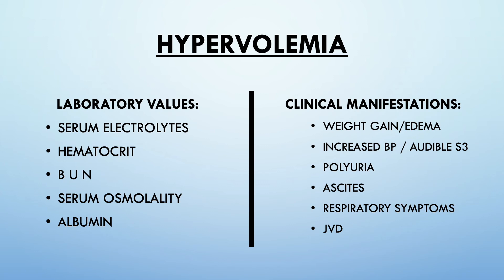Manifestations of hypervolemia reflect overhydration: weight gain, edema, and an audible S3 heart sound upon auscultation — the heart should normally produce only S1 and S2. Polyuria (increased urine output) occurs due to excess fluid. Ascites — fluid buildup in the abdominal cavity — may also be present. Respiratory symptoms include crackles heard in the lungs, tachypneic respirations, and dyspnea (labored breathing).